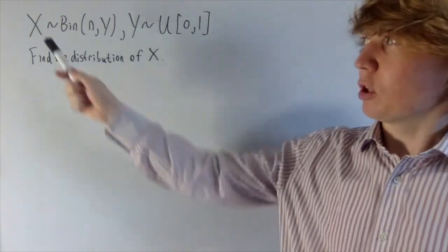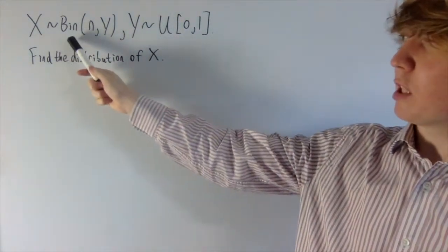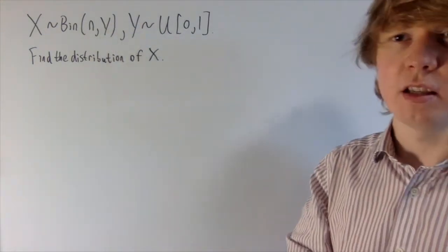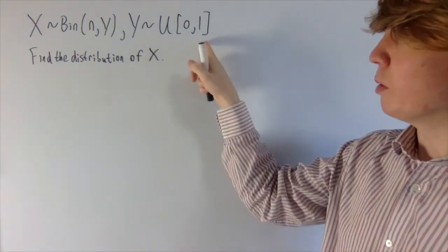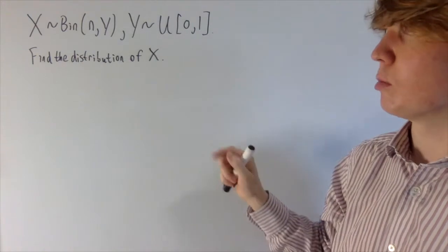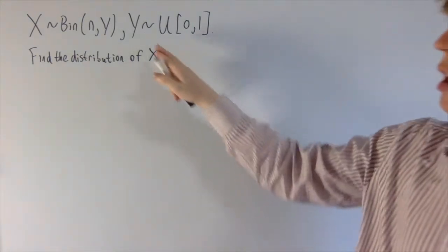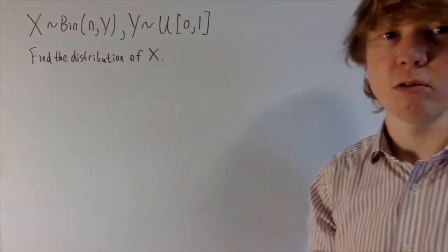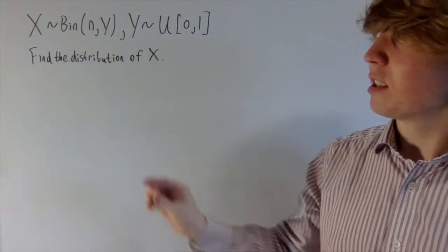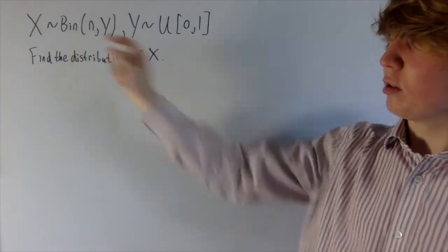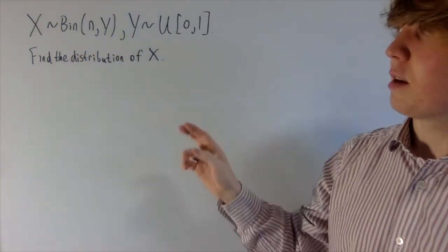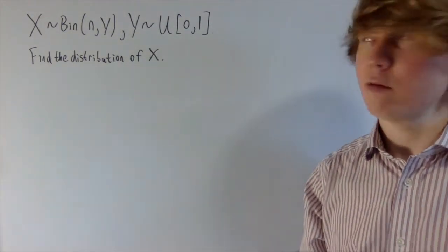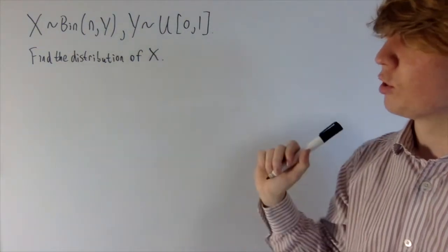We've got a problem where we have a random variable x which has a binomial distribution with n trials, and then the probability of success is determined by this uniform distribution y. So it's not quite a binomial distribution, but it's related to that. Here y is uniform — it's the continuous uniform distribution on the interval 0 and 1. Basically, we fix n, randomly pick our probability p of success, and ask: what's the distribution of x?